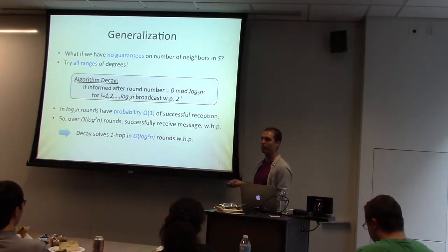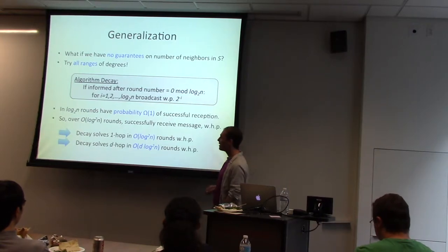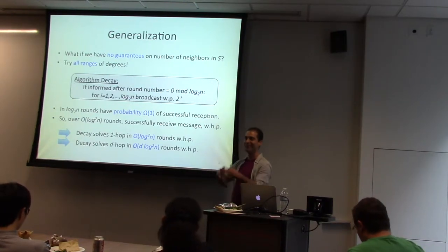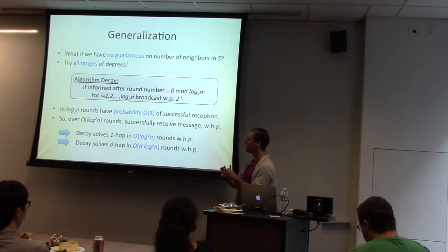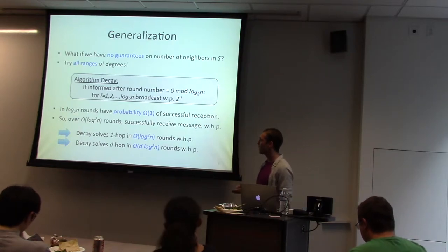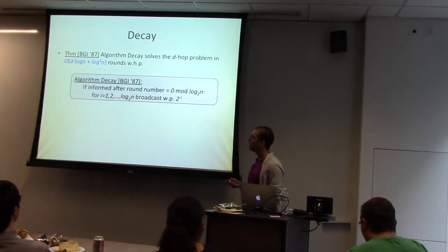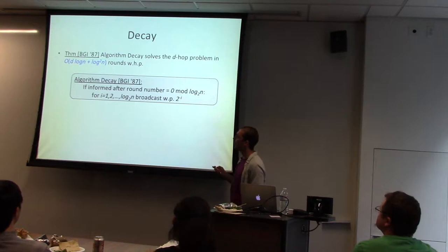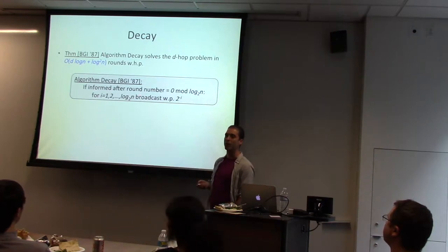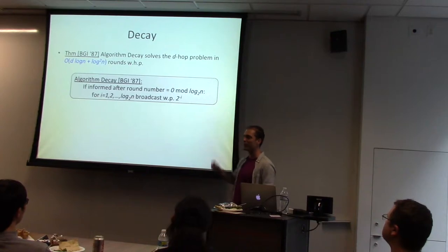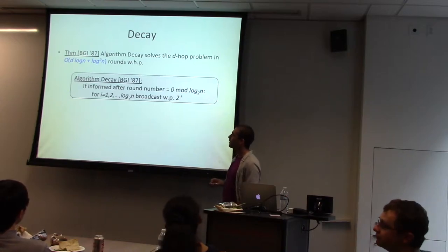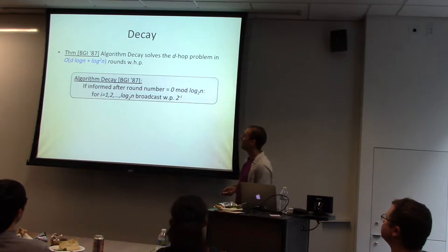What does that tell us about the D-hop problem? D times that — you shift the target. S is originally S, then you take all its neighbors that got the message, then their neighbors, and so on. D log squared N is the range we're talking about. More precisely, Bar-Yehuda, Goldreich, and Itai, who devised this algorithm in 1987, showed that this algorithm terminates in order of D log N plus log squared N rounds with high probability.